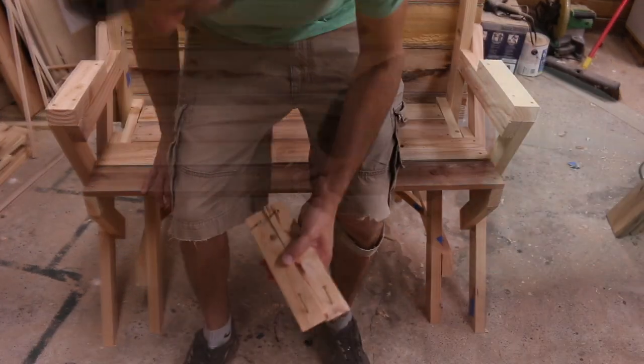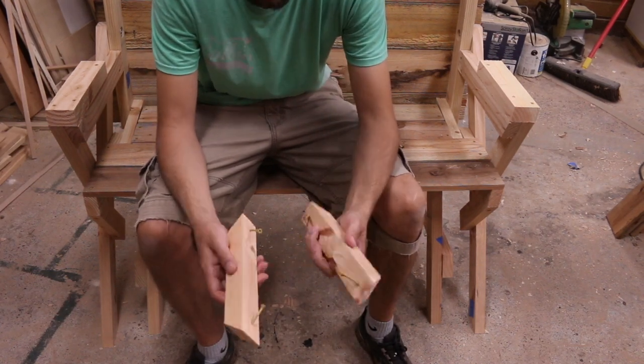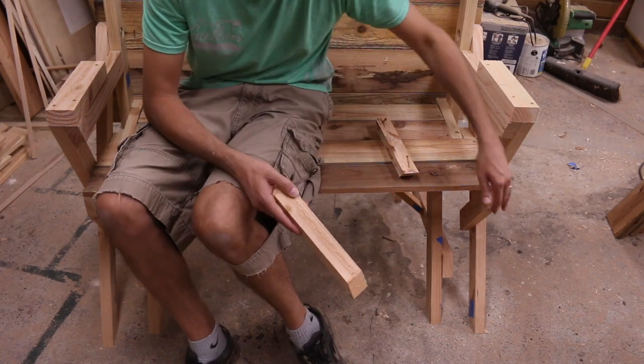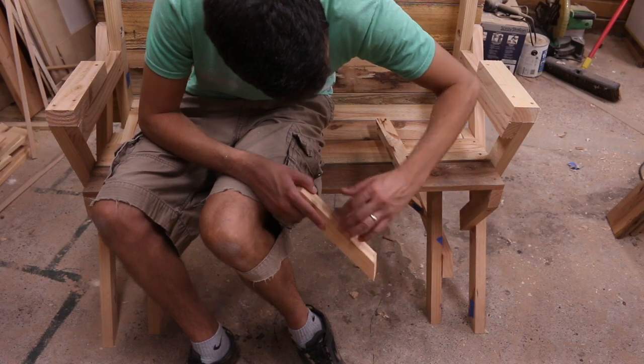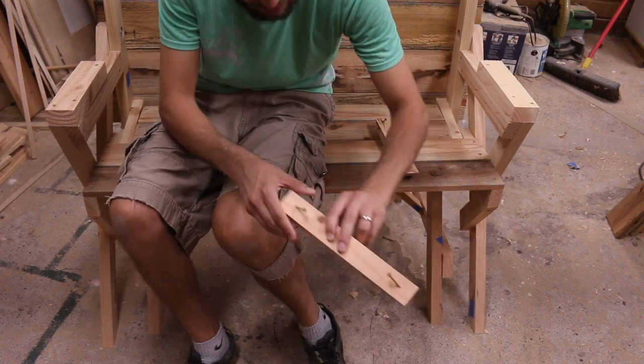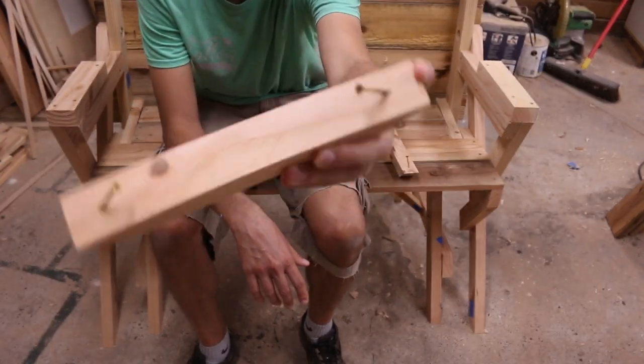Now I have these two diagonal braces, they are just under 11 inches long and we're going to have them on the front seat brace here and underneath the front seat slats like so. They're both cut at 45 degrees, I've got them pre-drilled already, again they're just under 11 inches.